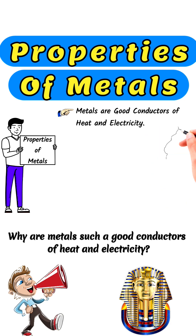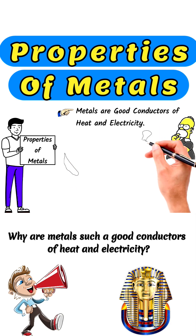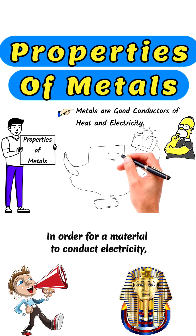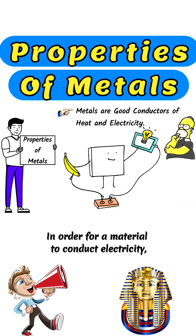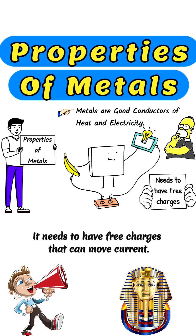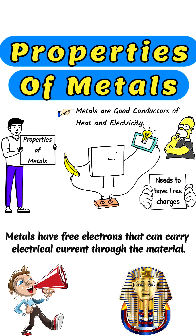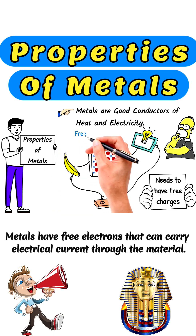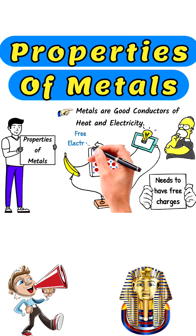Why are metals such good conductors of heat and electricity? In order for a material to conduct electricity, it needs to have free charges that can move current. Metals have free electrons that can carry electrical current through the material.